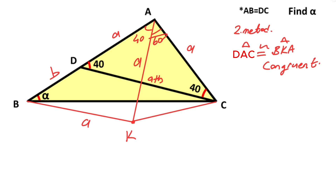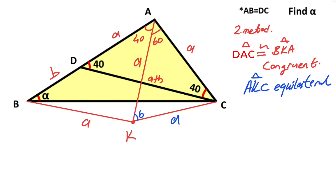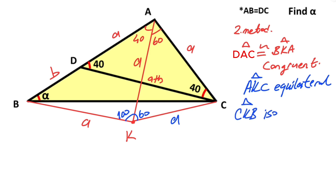If we connect K and C, triangle AKC becomes an equilateral triangle. Therefore this length is also a. We know that here is 60 degrees, and here is 100 degrees because of the congruence. If you focus on triangle CKB, this triangle is an isosceles triangle, so these angles must equal 10 degrees. We know here is 40 degrees because of the congruence, so alpha is going to be 30 degrees.